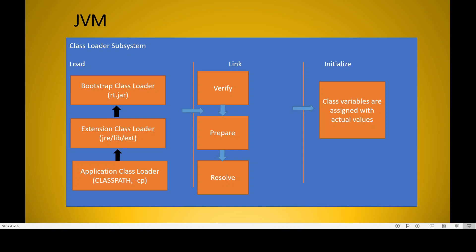The class loader can load bytecode from various sources. In our example when you call 'java MyClass', the class loader loads the bytecode from the file system. It can also load from network sockets. There are three types of class loaders: bootstrap class loader, extension class loader, and application class loader. The bootstrap class loader loads internal classes distributed with your JDK installation — the jar files that come with the JDK.